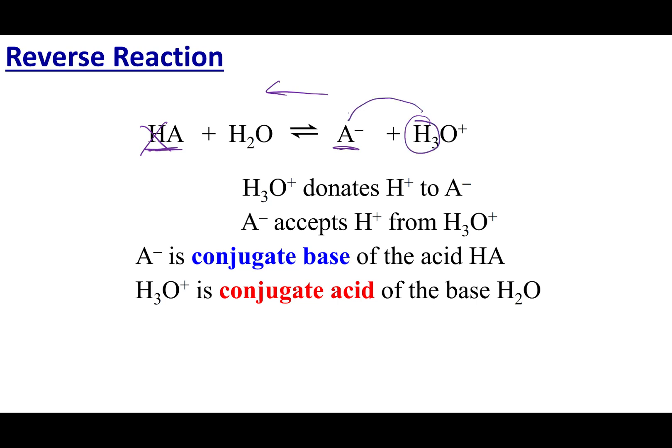Now, what you'll notice is if I run this reaction backwards, well, this H is going to be donated to this A-. So if A- accepts something, it is a base. And because it is related to HA by one proton, it is the conjugate base.